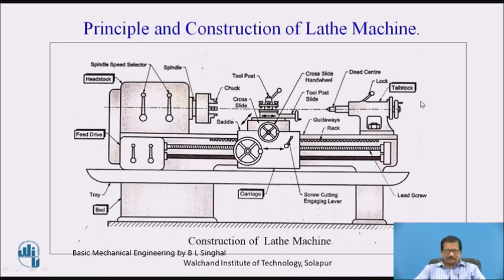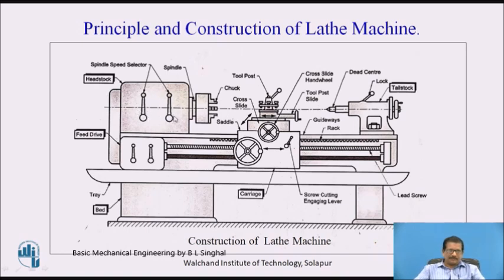Now, what is headstock? Headstock is fixed and mounted on the bed, and it contains the drive mechanism. If it is a geared head lathe, this part will contain the gear train with many gears which can mesh with each other by changing the change levers or spindle speed levers. We can position them at different positions to give different speeds to the spindle. This drive mechanism is driven with the help of an electrical motor, which gives drive through the gear train and transfers it to the spindle.